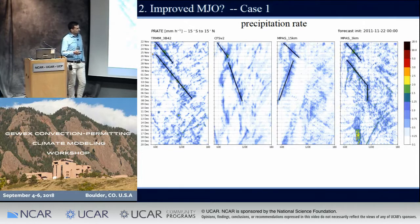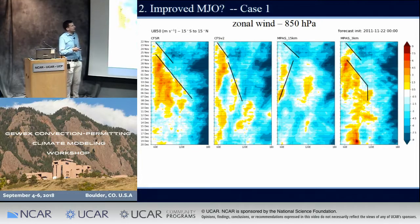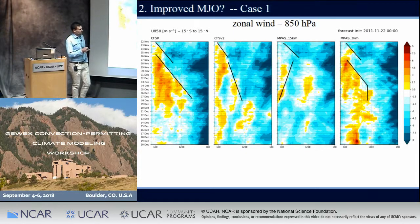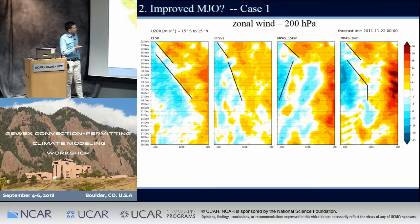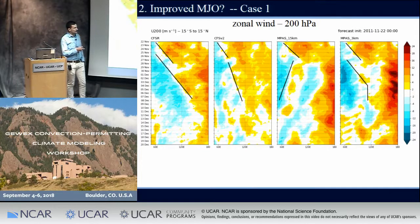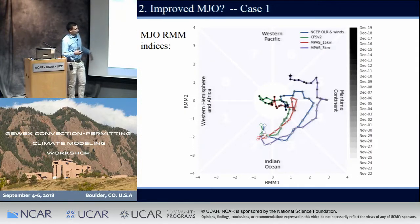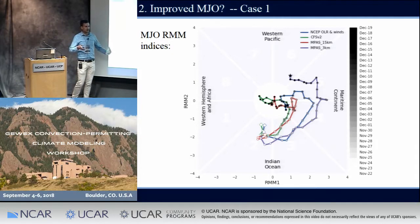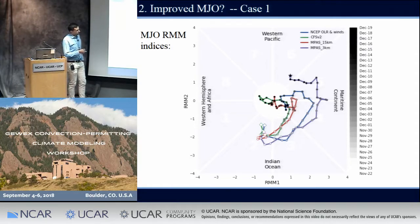Looking briefly at the dynamics: the 3-kilometer MPAS captures the low-level convergence associated with both waves far better than the other two models. At upper levels, the upper-level divergence associated with the two waves is quite well captured, although there's a preceding upper-level divergence in the West Pacific ahead of the MJO that may relate to its stalling over the maritime continent. Compiling these into the RMM index, the 3-kilometer MPAS — shown in purple — follows observations much better than our two runs with parameterized convection, which dampen the RMM amplitude fairly early on.